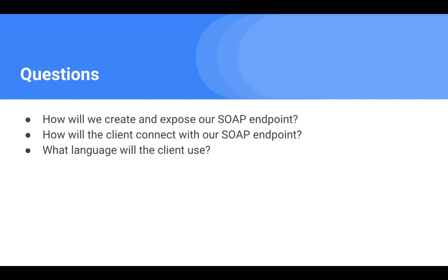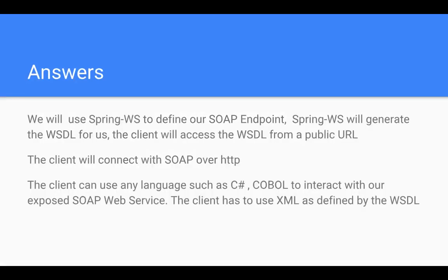For our final overview, let's look at some questions. First, how will we create and expose our SOAP endpoint? Second, how will the client connect with our SOAP endpoint? And third, what language will the client use? Number one: we will use Spring Web Services to define our SOAP endpoint. Spring Web Services will generate the WSDL for us and automatically publish it to a public URL.